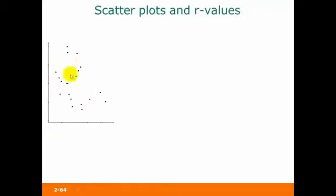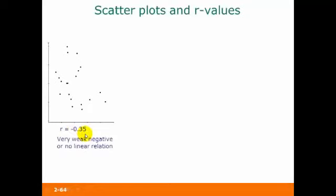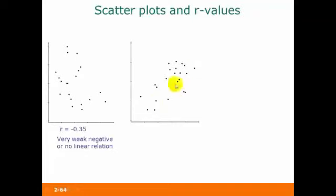Here's another one. You can kind of see that the data is going down from left to right somewhat, but this would be a very weak relationship, or maybe no relationship. The R value for this one is actually negative 0.35. In this next one, we can see that the data is trending up from left to right — again, not a very strong relation, but stronger than the last one. The R value for this one turns out to be 0.635, so we would call this a weak positive relation.